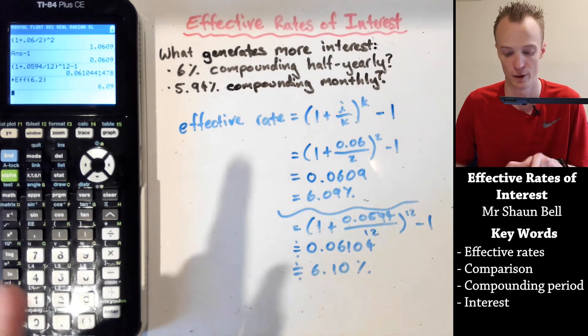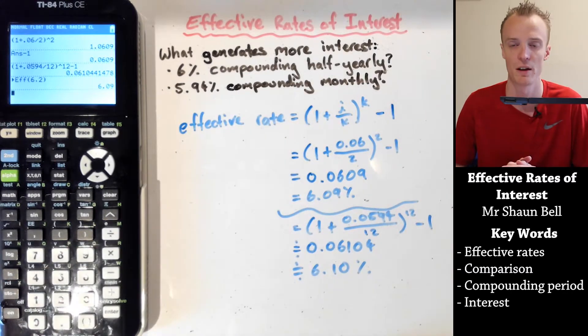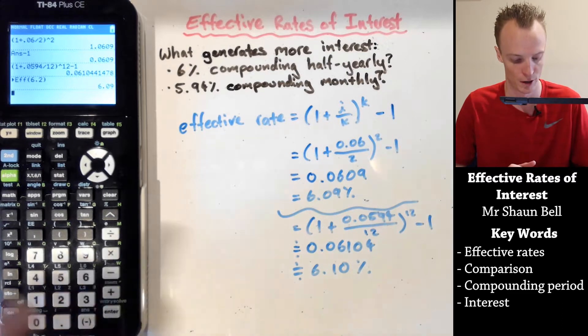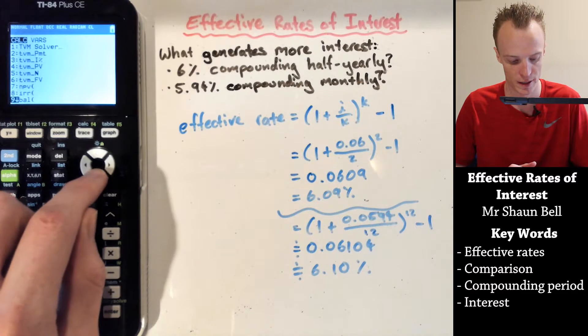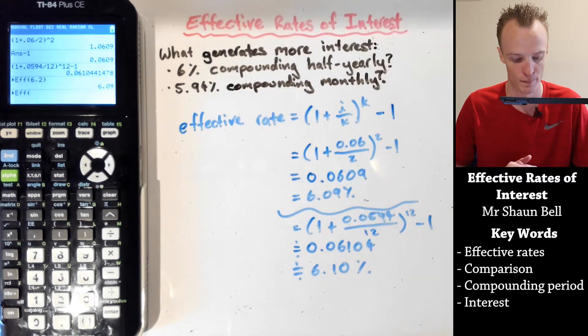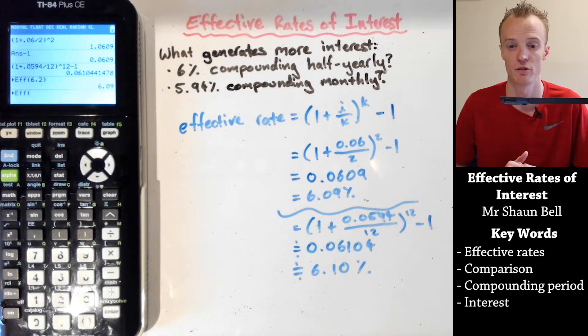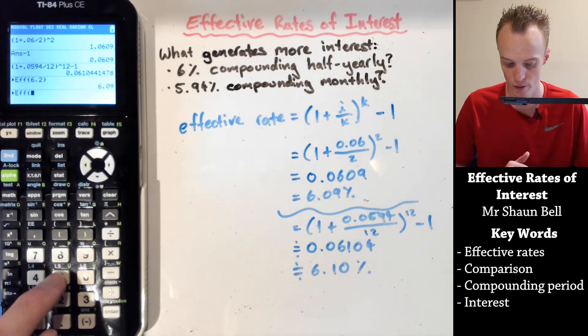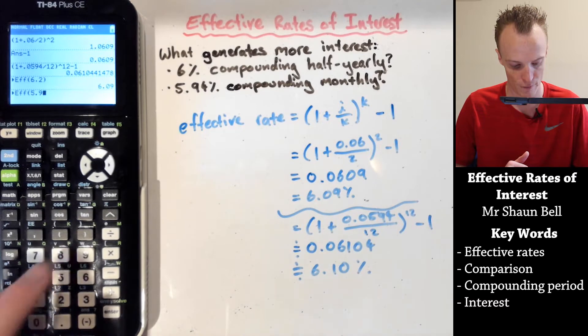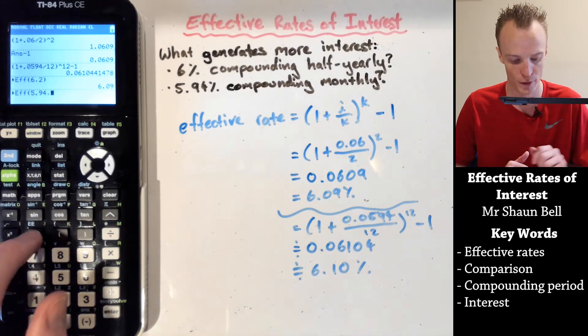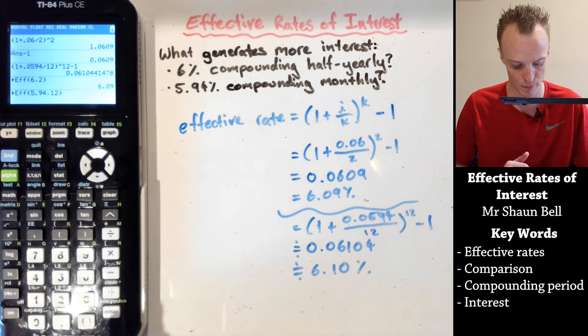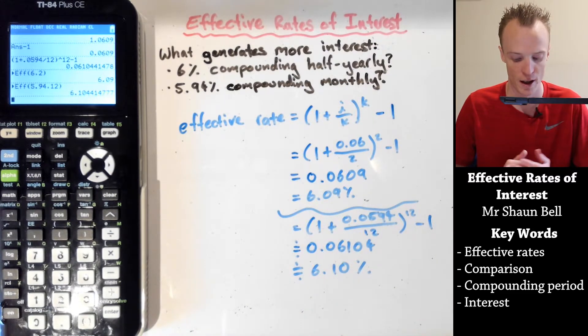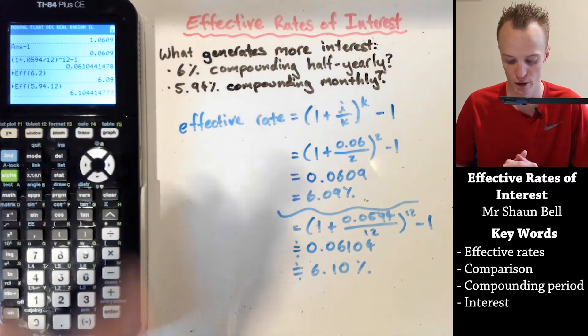We can repeat the process to compare it with the 5.94%. So we go into apps, our finance, we scroll down till we get to the C option, which is the effective option. The two pieces of information it requires is the percentage. So that's 5.94. Separate it with a comma. And then it wants how often it compounds per year. So it's 12 times per year. So you put your 12 in, close the bracket, hit the enter, and it'll provide us that effective rate of interest.